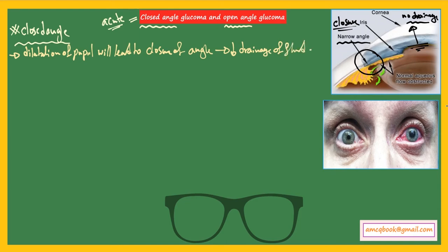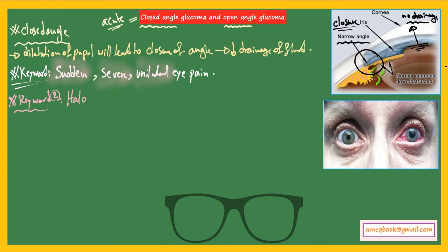The keywords are as follows: sudden, severe, unilateral eye pain due to increased pressure of the aqueous humor inside the eye. Another keyword is that you will see halos around lights.